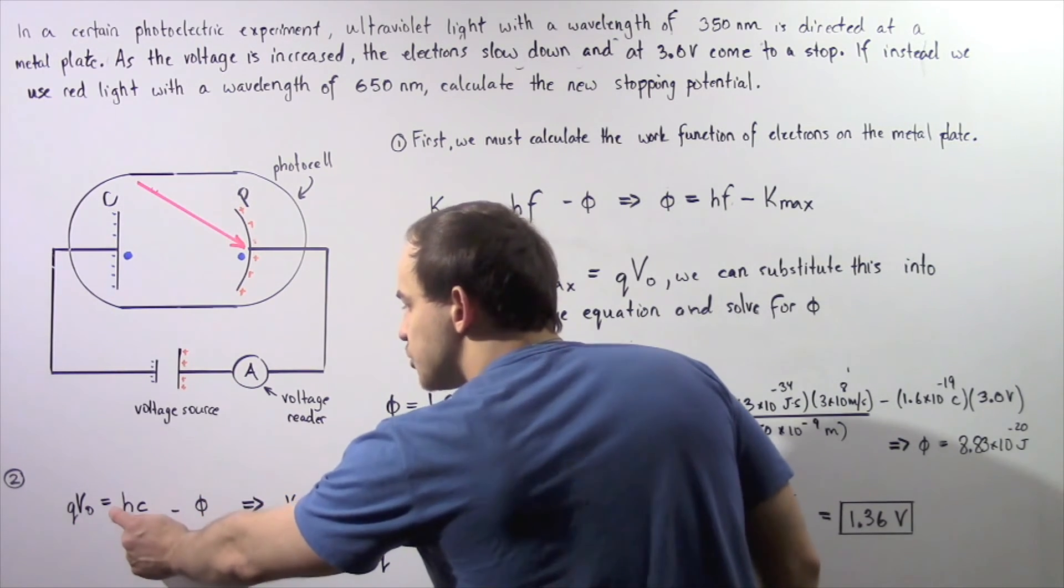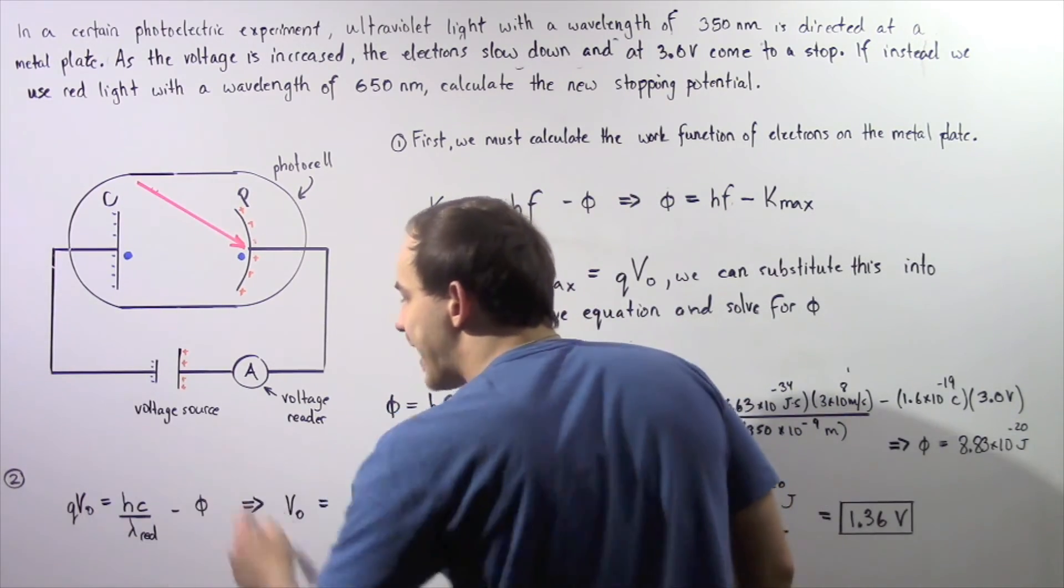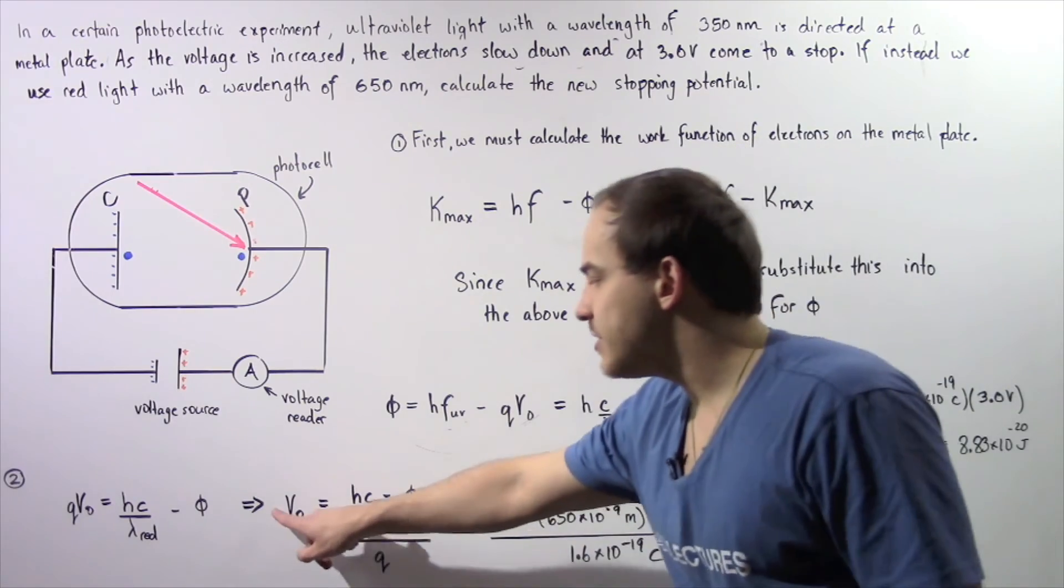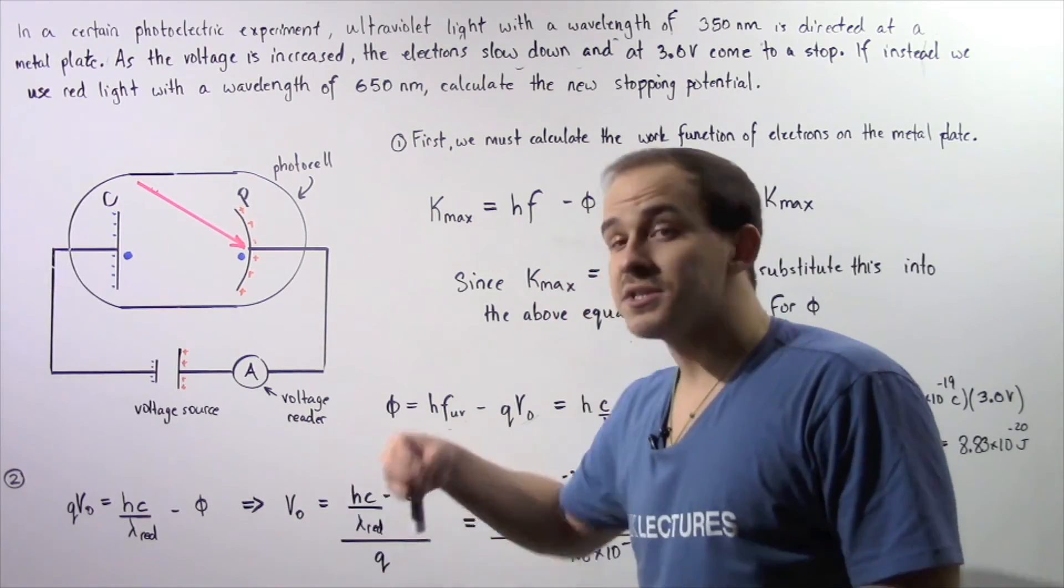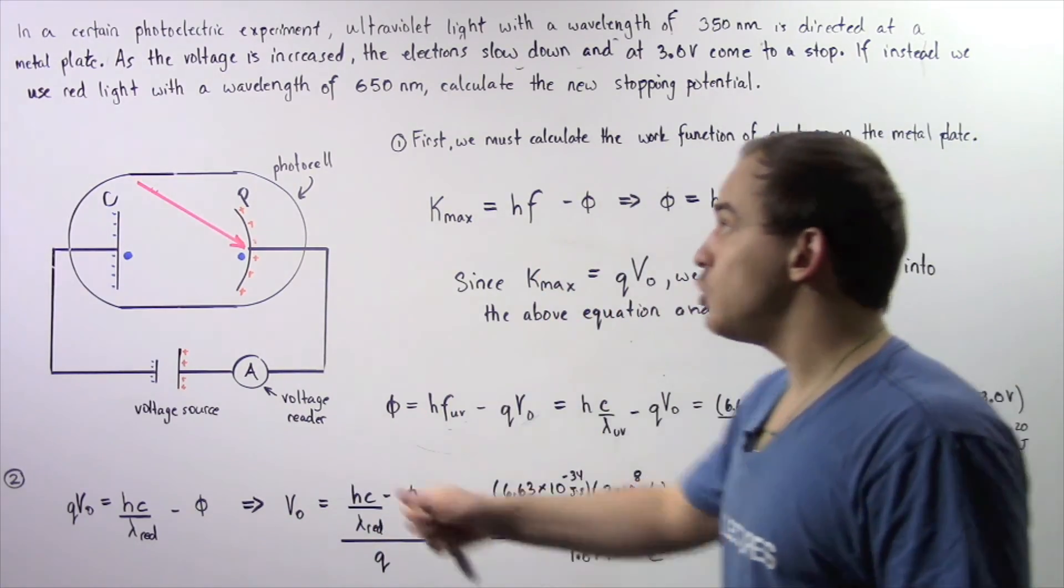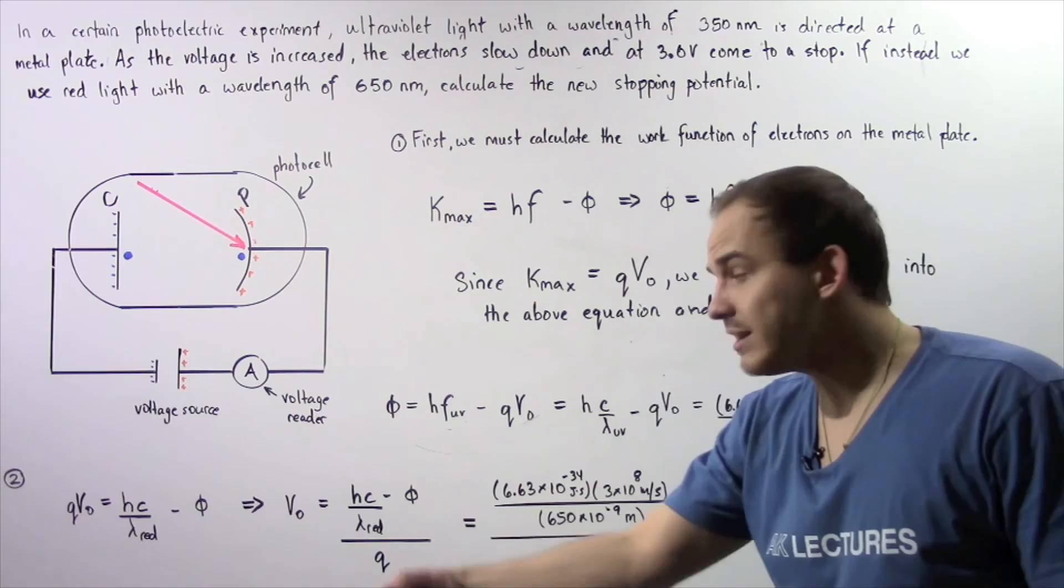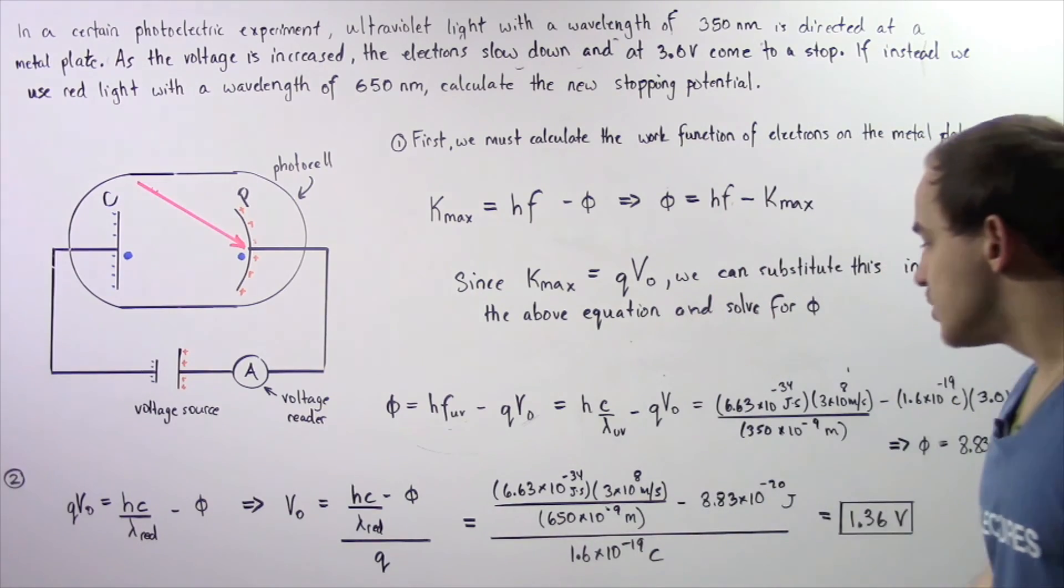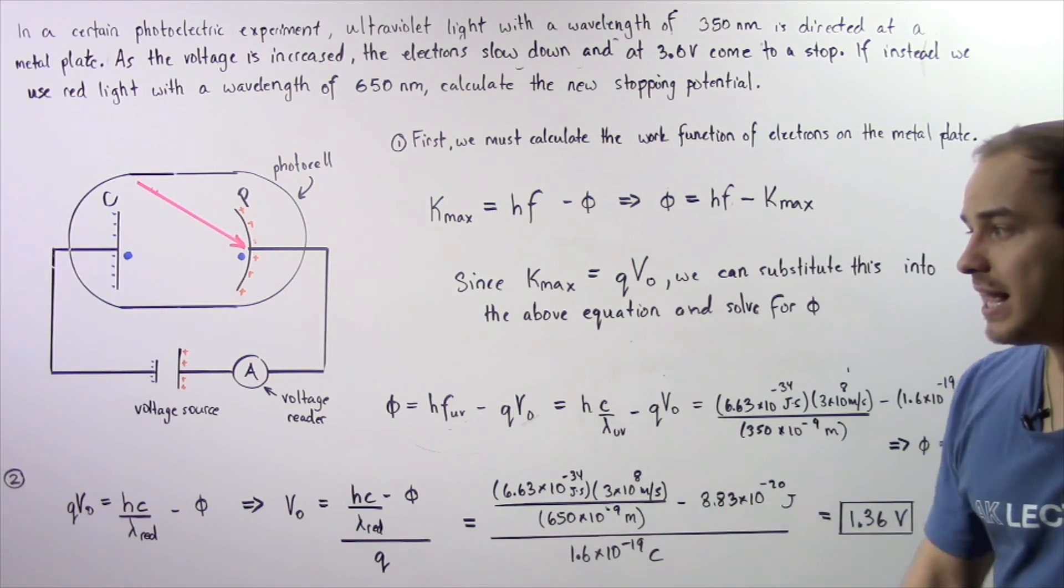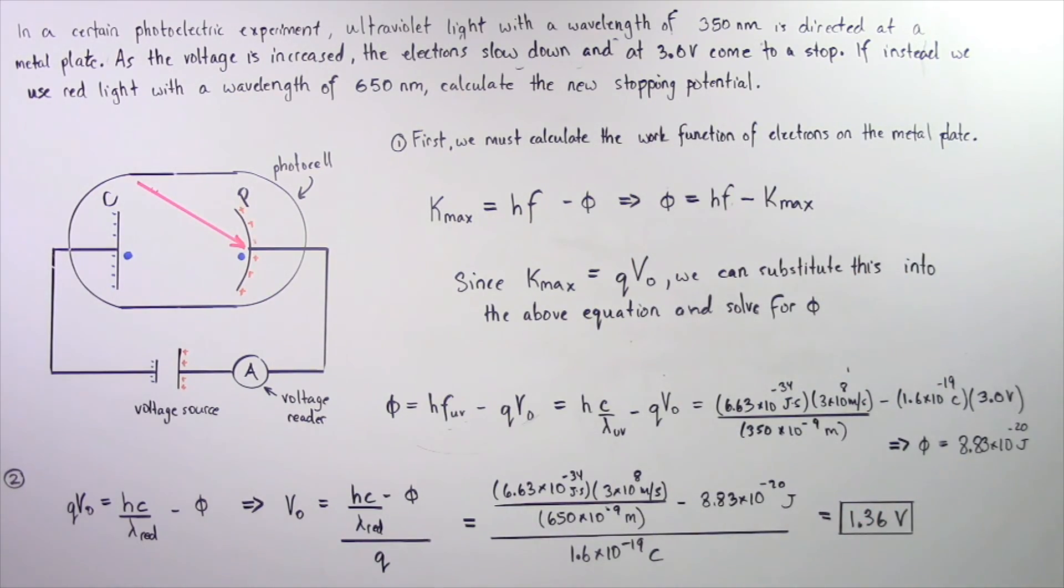So QV naught is equal to HC divided by lambda red minus phi. If we take this equation and solve for V naught, we see that V naught, which is not the same V naught as in this case, this V naught represents the stopping voltage when using red light. So V naught is equal to HC divided by the wavelength of red light minus phi, what we calculated in part 1, divided by Q. So we plug in our values and we see that the stopping voltage, the stopping potential when using red light is equal to about 1.36 volts.